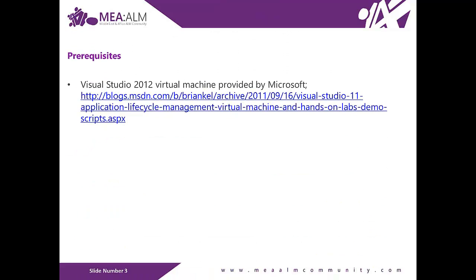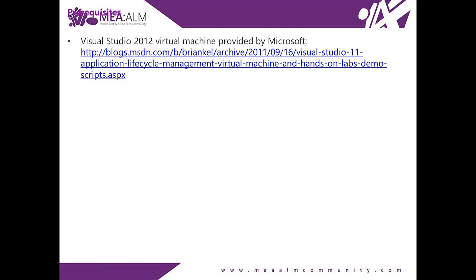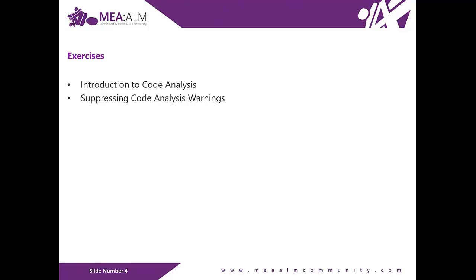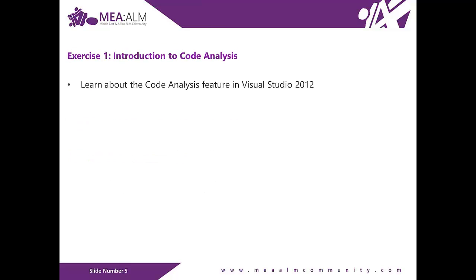To go through the lab, you need to download the Visual Studio 2012 virtual machine provided by Microsoft. This lab consists of two exercises. The first exercise is an introduction to code analysis, whereas the second one is about suppressing code analysis warnings. In Exercise 1, you will learn about the code analysis feature in Visual Studio 2012 by configuring the rule set used, performing code analysis on a sample project, and addressing some of the warnings that are raised.